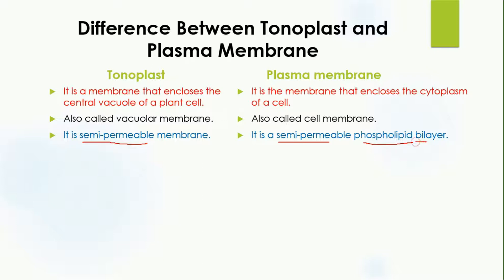The plasma membrane is also a phospholipid bilayer, meaning it consists of two layers of phospholipids. If you remember the structure of the plasma membrane, this is one layer of phospholipid and this is another layer of phospholipid — that is why it is known as a phospholipid bilayer.